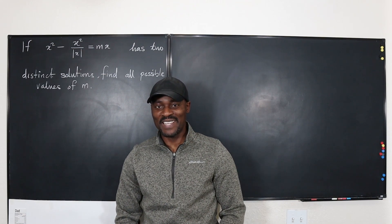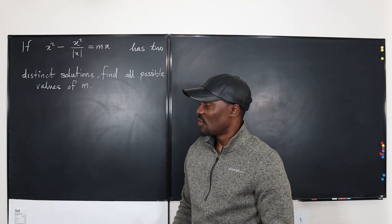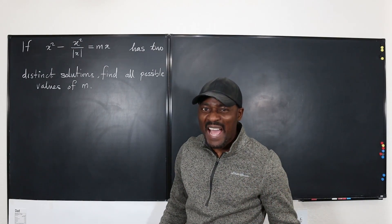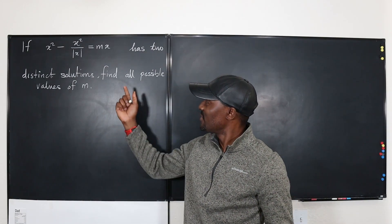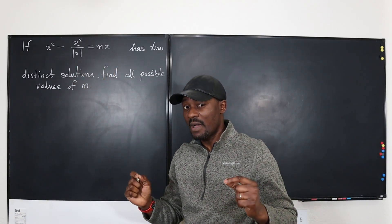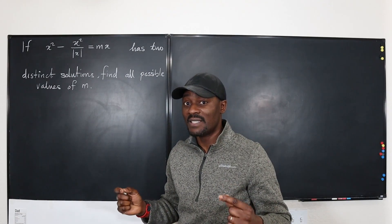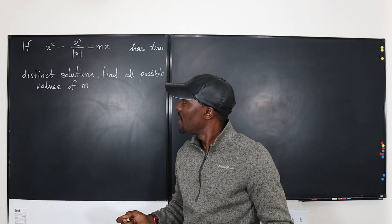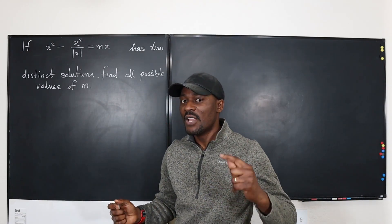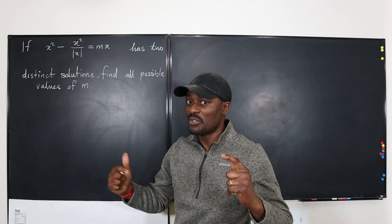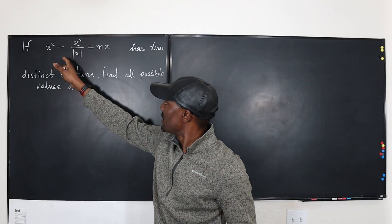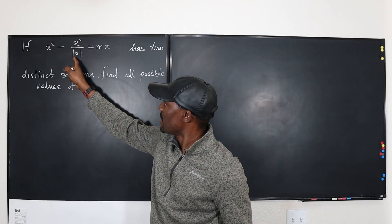Hello and welcome to another video. I have a question here that talks about finding the values of m that would make this equation have two distinct values of x — that is, two distinct solutions. Usually when you get two distinct solutions when you solve an equation, you should know that you're dealing with a quadratic equation. I know this has x squared and this has x squared also.